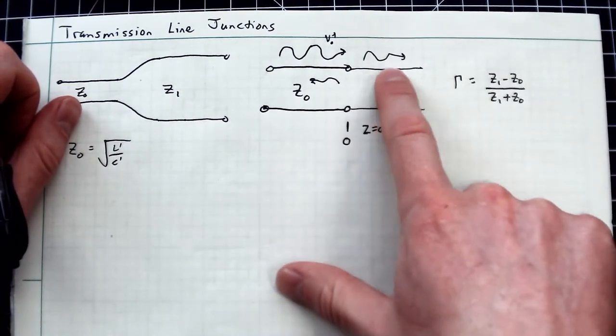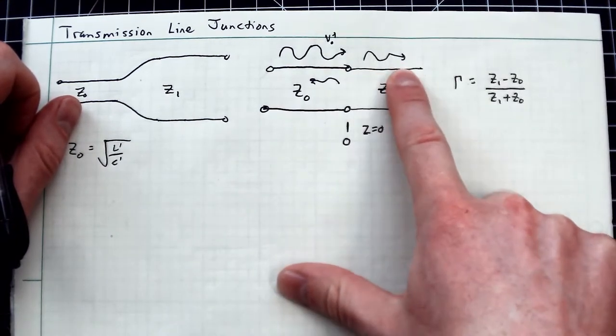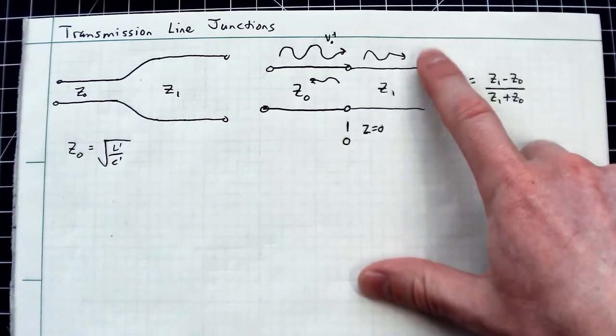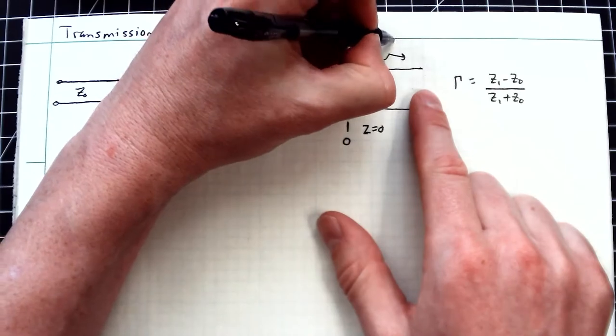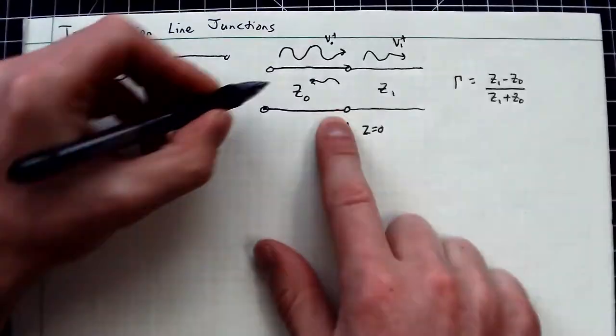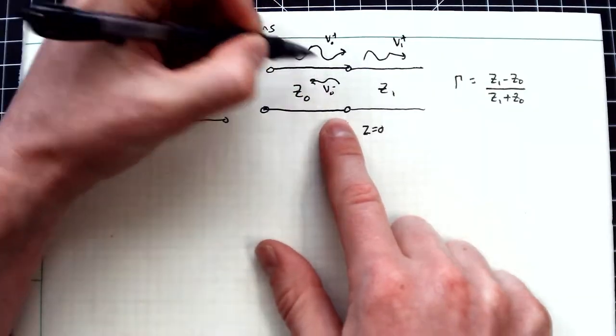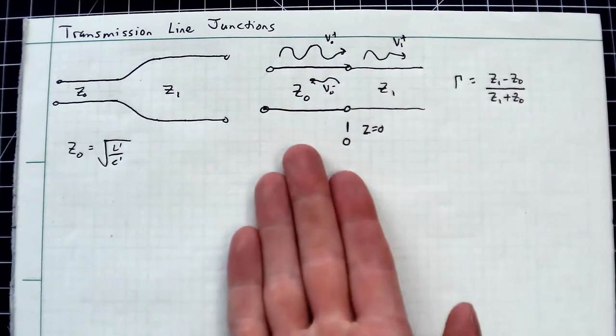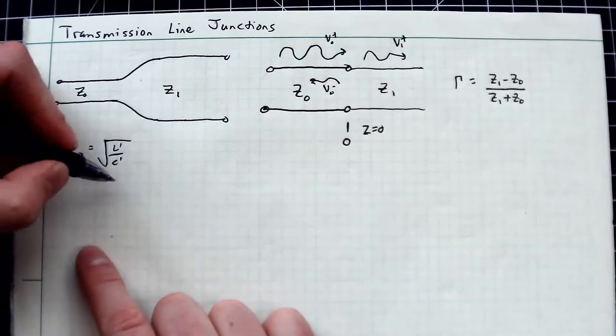What we really want to focus on is this transmitted wave over here. The question is, how do I calculate the amplitude of this guy? I'm going to call this V₁⁺, whereas this might be V₀⁻. Let's write out the functional form for all the signals to the left of this boundary.